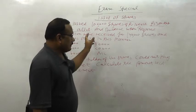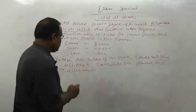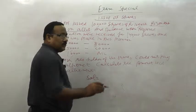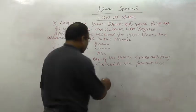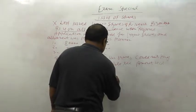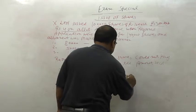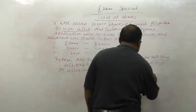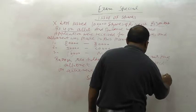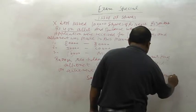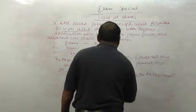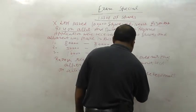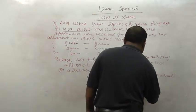Now, how will the solution be done? First, the total amount to be received on allotment: 1 lakh shares multiplied by rupees 4 allotment equals 4 lakhs total.